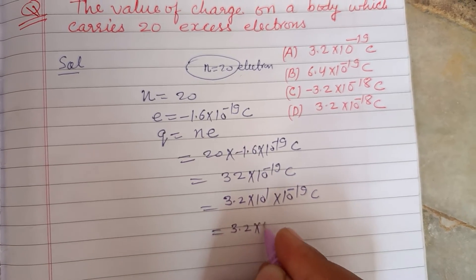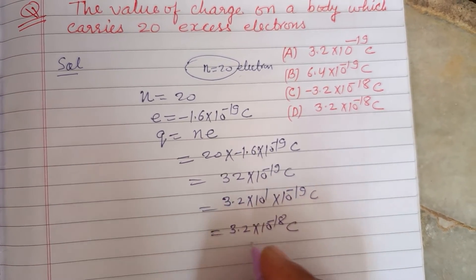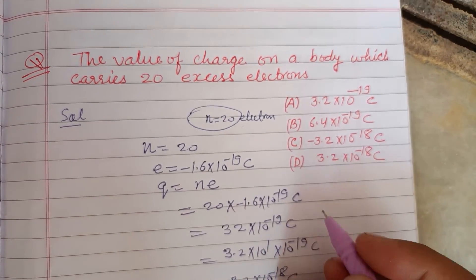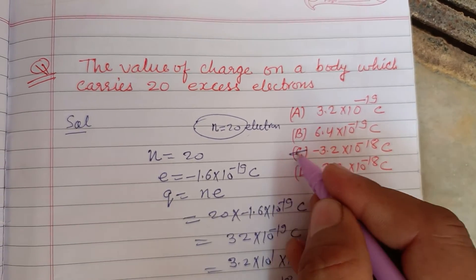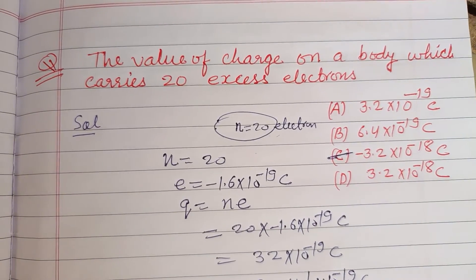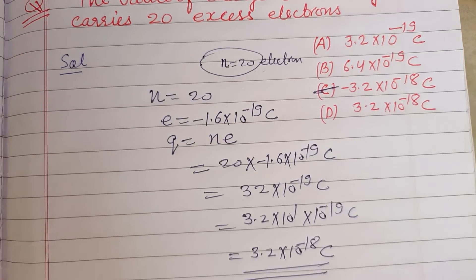So this is 3.2 times 10 to the power minus 18 coulombs, which is the correct answer to this question. It's found in option C. Option C is correct. I hope you got it. Please like the video and subscribe to the channel.